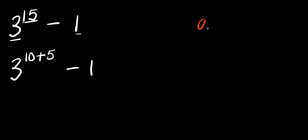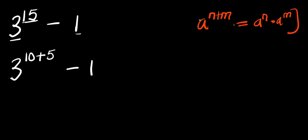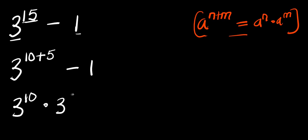Consider we have a power n plus m equals a power n times a power m. Applying this right here, we will have 3 power 10 times 3 power 5 minus 1.